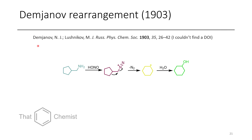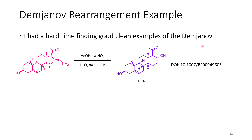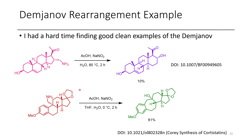The next reaction is the Demjanov rearrangement. A non-stabilized primary amine undergoes treatment with nitrous acid to form a diazonium, which can then undergo a 1,2-shift displacing nitrogen as a leaving group, forming a secondary carbocation, which can then be trapped with water. The original paper didn't have a DOI, and nobody in the Discord was able to find one. There are very few good examples in the literature, but I've got a couple: one where they undergo ring expansion to form four cyclohexane systems in a row from a steroid derivative, and another where a 6-6-6-5 steroid system was converted to a 6-7-6-5 system through ring expansion — trapping it as the tertiary alcohol. This was in E.J. Corey's synthesis of cortistatin.